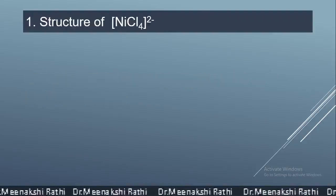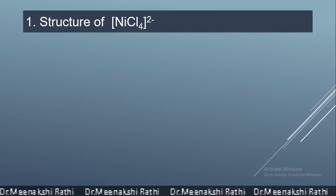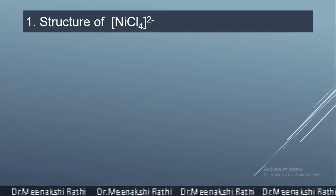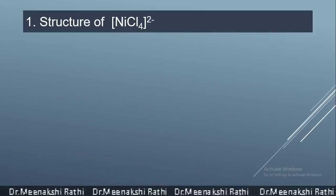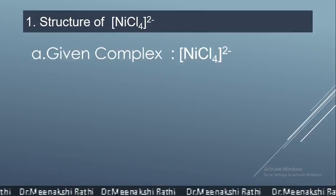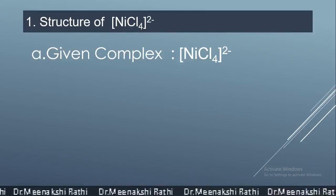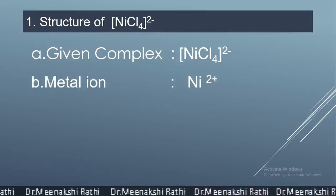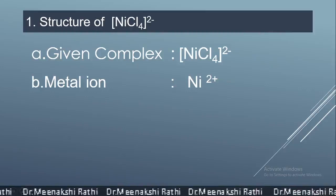The first example we are discussing is the structure of NiCl₄²⁻. In this complex, how we can describe the structure? The given complex is NiCl₄²⁻. The central metal ion here is Ni²⁺. Now, how can you find out the oxidation state of the metal?